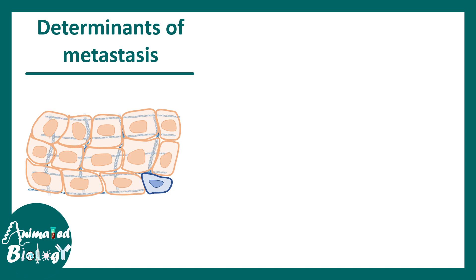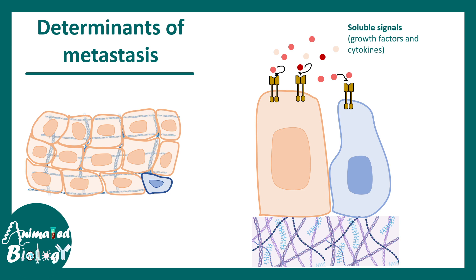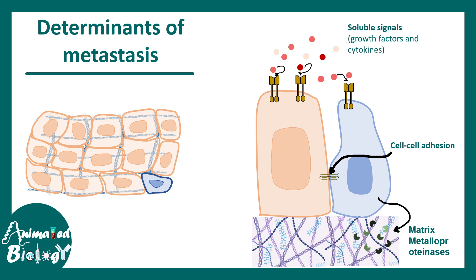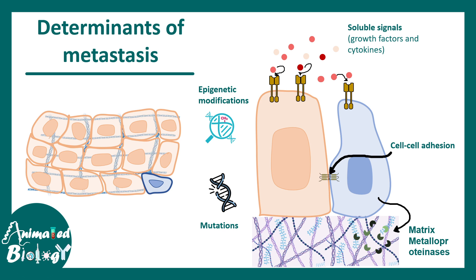To summarize the determinants of metastasis: the most important determinant is the external signal, which could be a growth factor, chemokine, cytokine, etc. Cell-cell adhesion and cell-basement adhesion are very important and are generally dissolved during the metastatic process. Second, matrix metalloproteinases are key factors that dissolve or modify the extracellular matrix. Additional factors include genetic mutations which make a cell more likely to metastasize. And more recently, epigenetic modifications have been shown to be a leading cause of cancer metastasis.